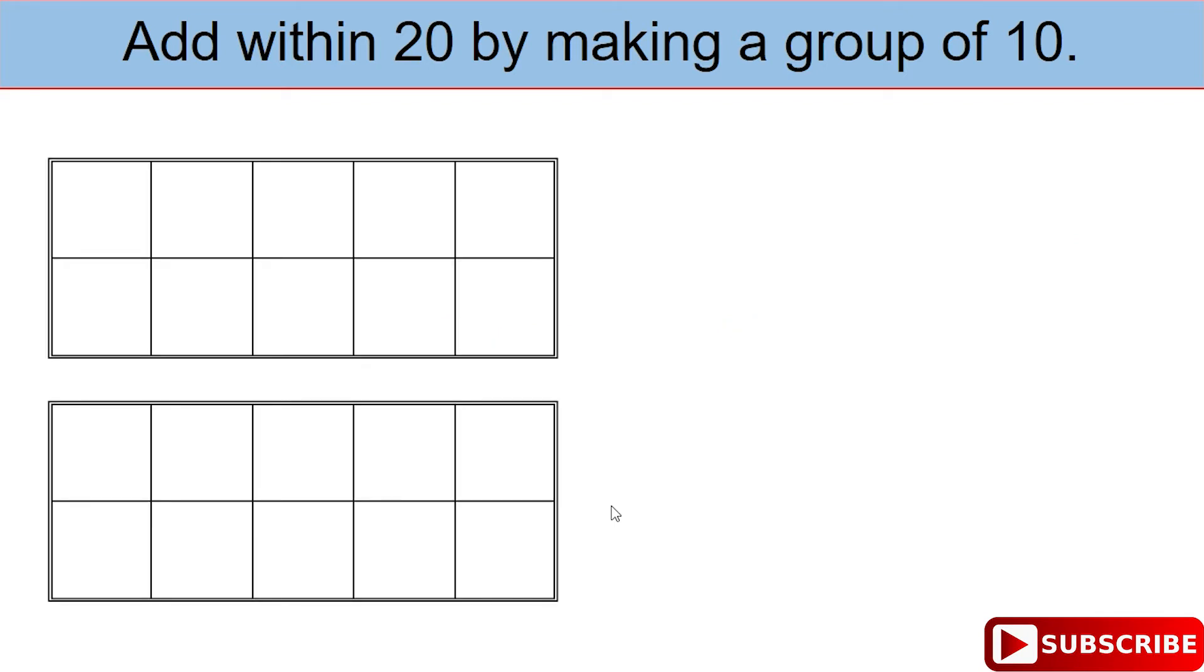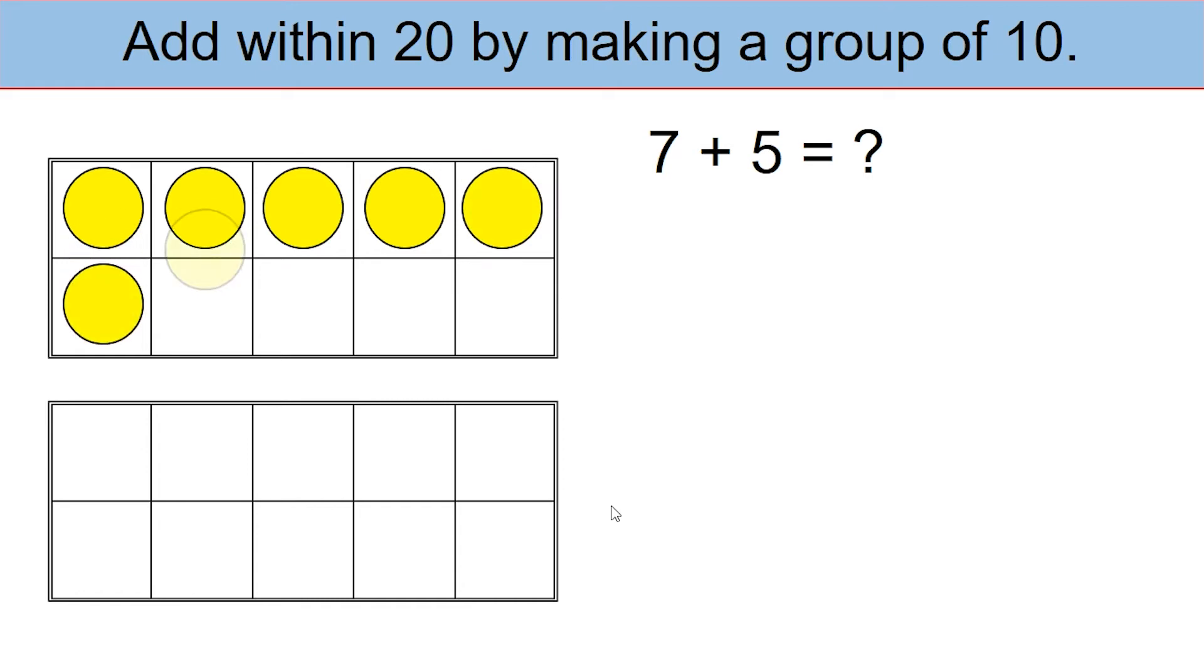Let's look at example number 2. In this case, we are going to add 7 plus 5. In the first tens frame, use 7 of the yellow counters to set them up. In the second tens frame, use the red counters to set up 5.